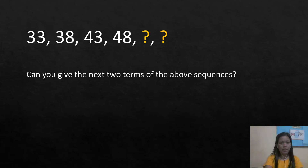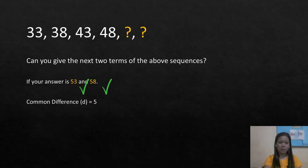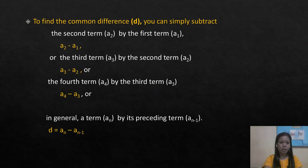Here is another example: 33, 38, 43, 48. What are the next two terms? If your answer is 53 and 58, then you are correct. Our common difference is 5, since 33 plus 5 equals 38, and continuing, the next terms are 53 and 58.